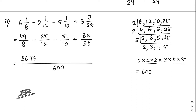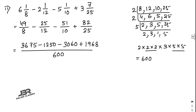600 divided by 12 is 50, so 50 times 25 equals 1250; and 50 times 51 equals 2550 — wait, that is 50 times 51 equals 2550. 600 divided by 10 is 60, so 60 times 51... Next, 600 divided by 25 is 24, and 24 times 82 equals 1968.